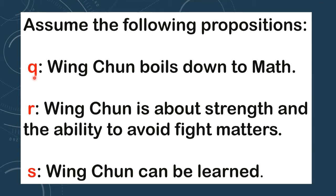We have statement Q, or proposition Q: Wing Chun boils down to mathematics. What do you mean by that? It means that Wing Chun and mathematics are related — you can see mathematics in Wing Chun. What about proposition R? Wing Chun is about strength and the ability to avoid fight. So you use Wing Chun for self-defense and not just to fight others.